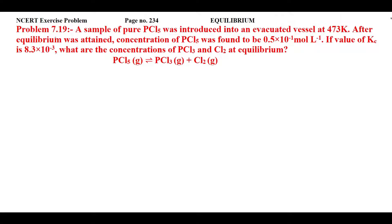Students, see NCERT exercise problem 7.19 from page number 234 of the Equilibrium chapter. Let's read the statement: A sample of pure PCl₅ was introduced into an evacuated vessel at 473 Kelvin. After equilibrium was attained, concentration of PCl₅ was found to be 0.5 × 10⁻¹ mol/L. If the value of Kc is 8.3 × 10⁻³, what are the concentrations of PCl₃ and Cl₂ at equilibrium?